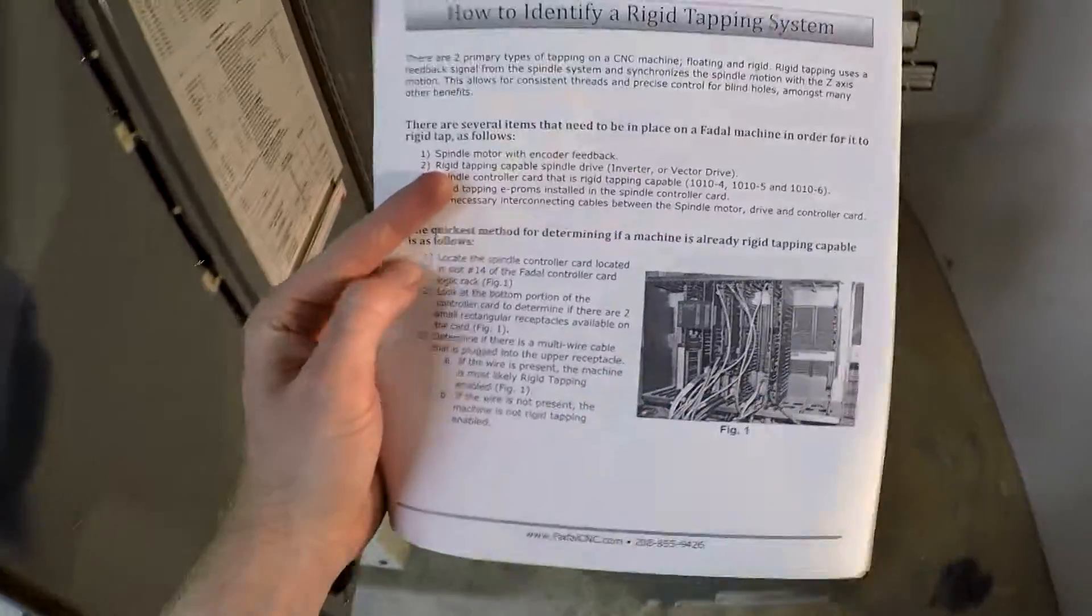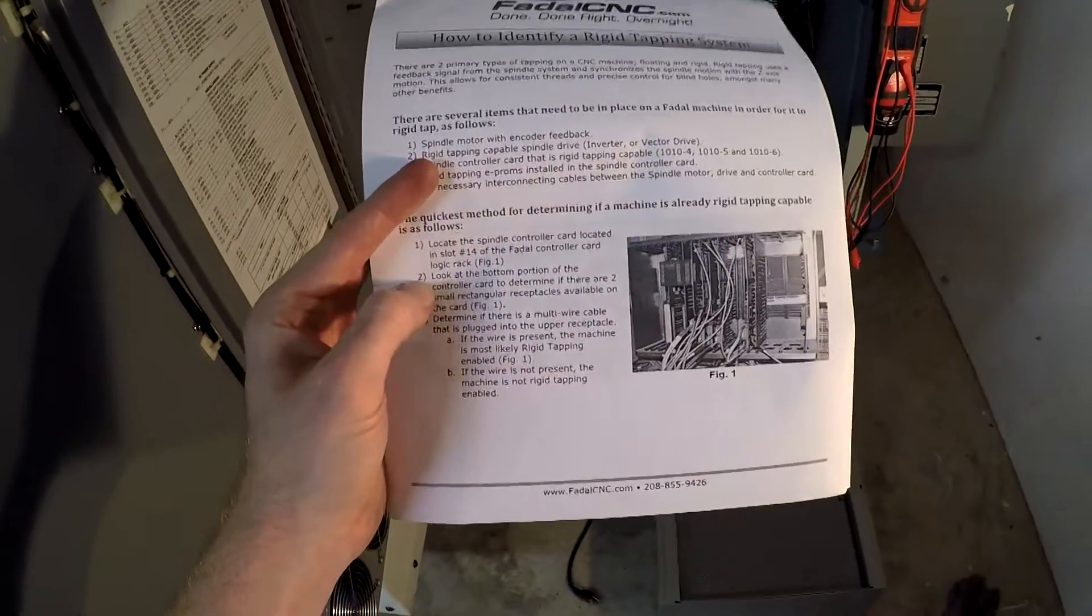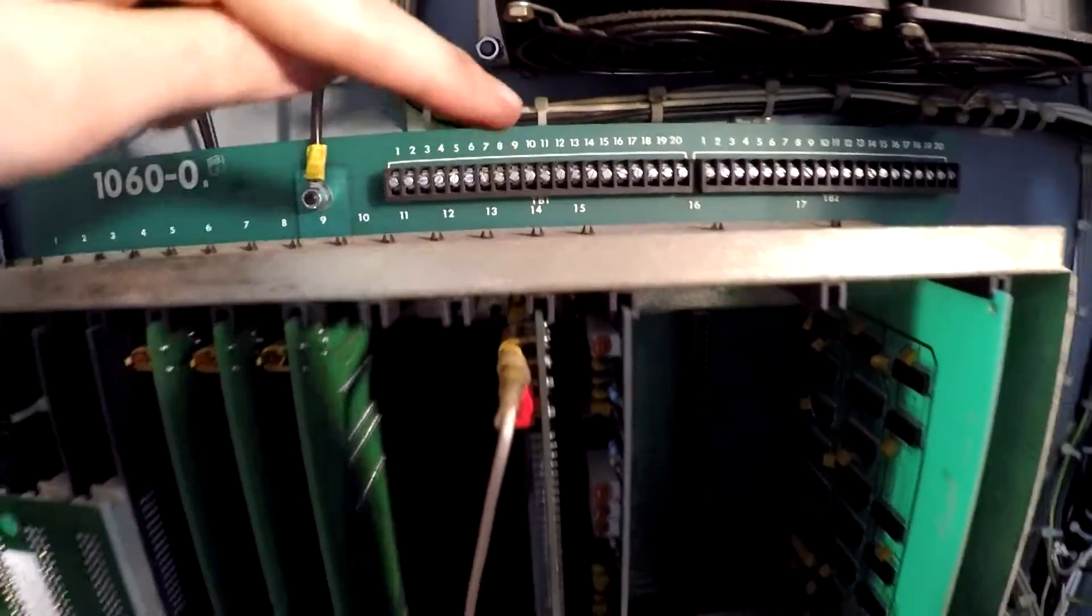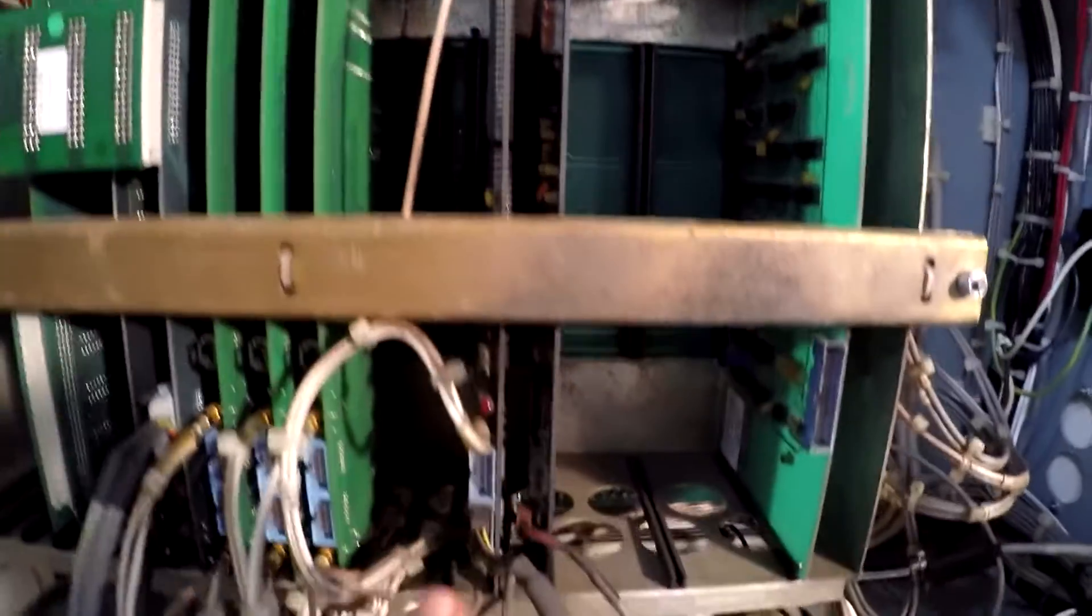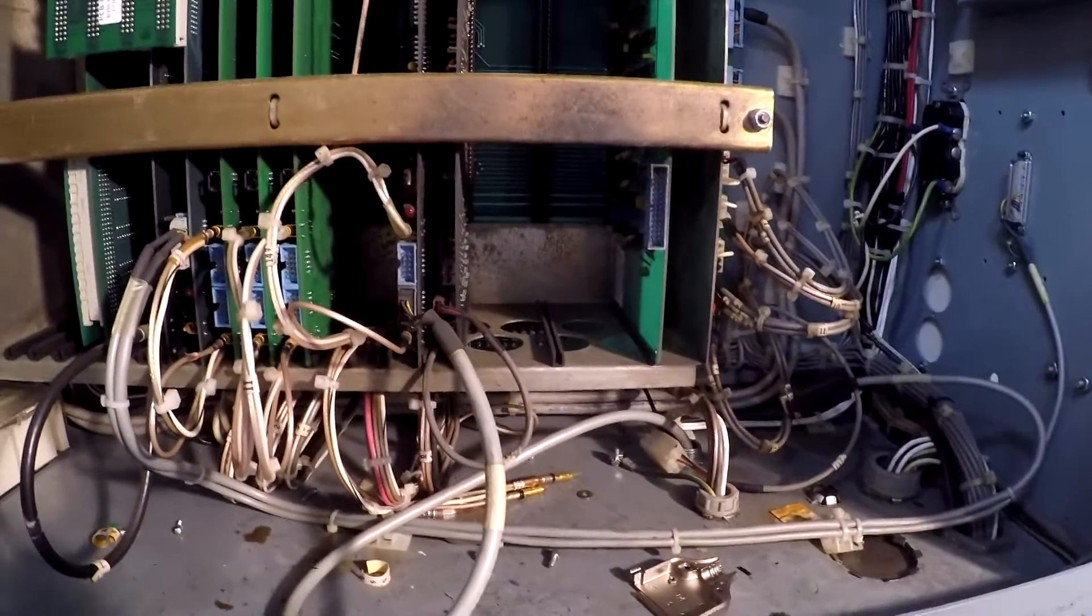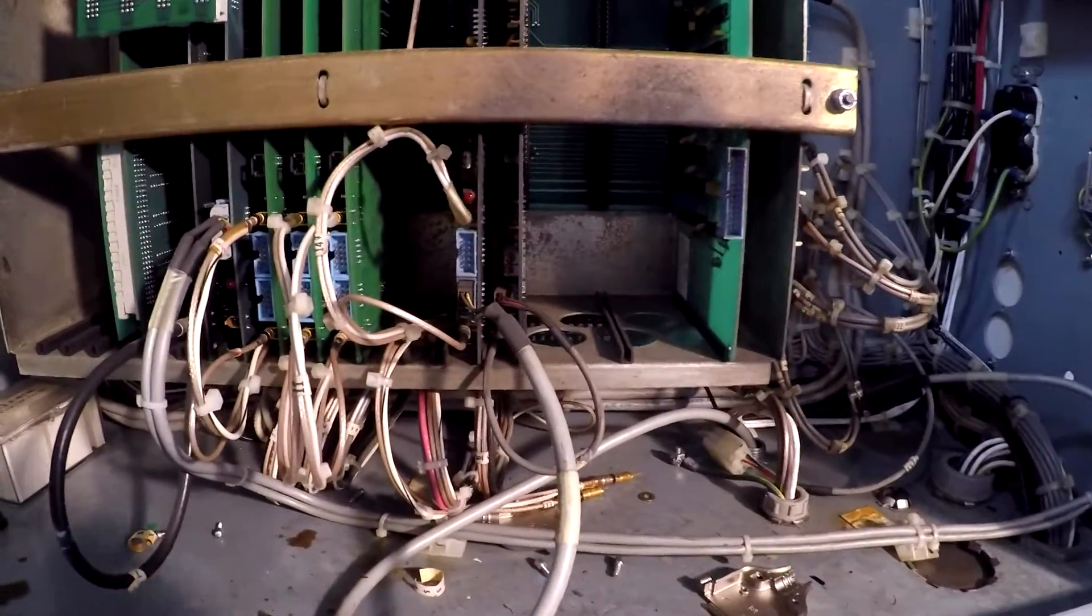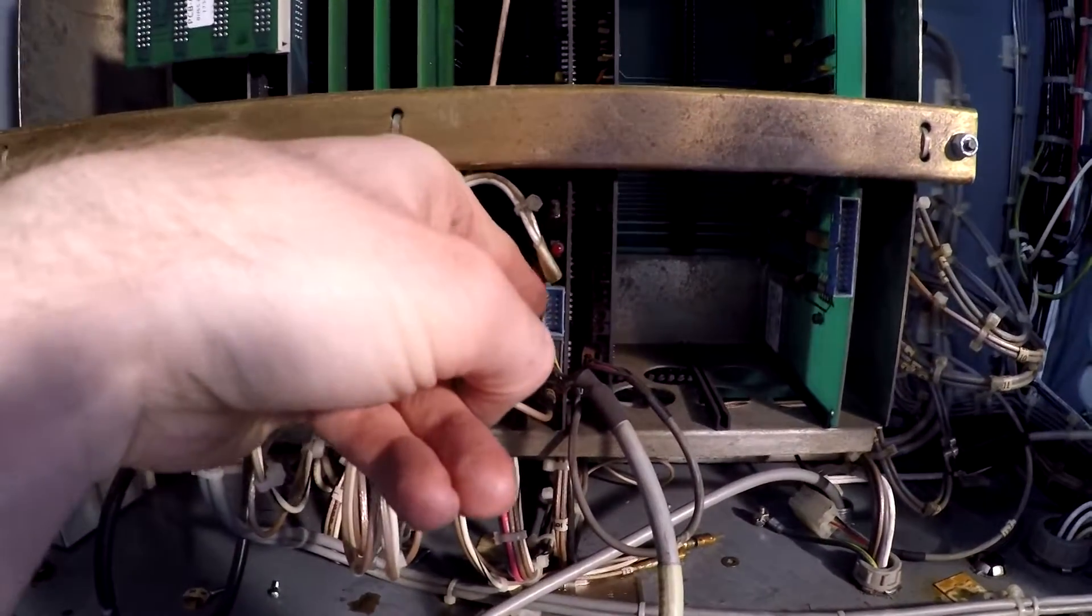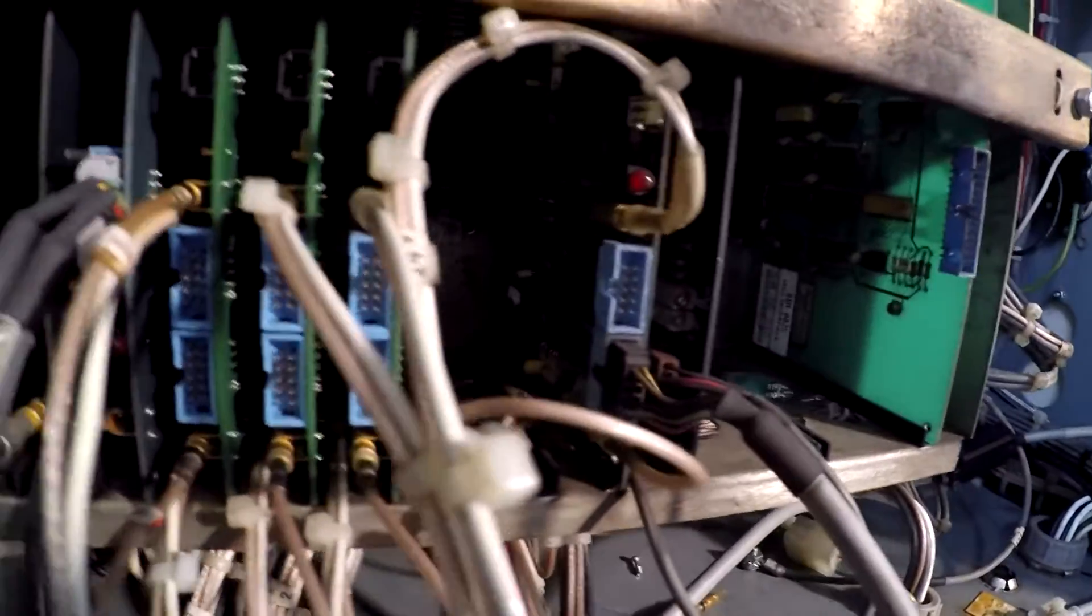So the first step is to check for the spindle card. If you go down here in your cabinet, slot 14. I don't know if you can see it here. So 14, this guy. We go down here. It says look at the bottom of it and see if there's these rectangular plugs. So you can see on mine I have that.